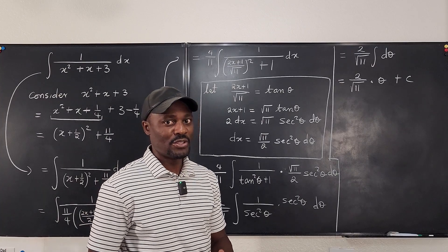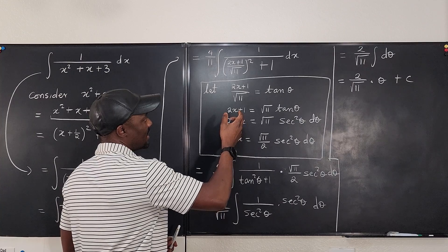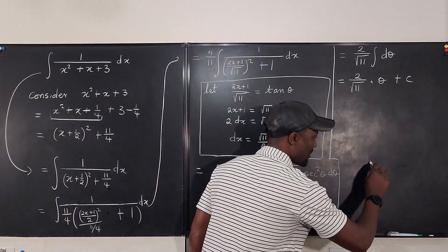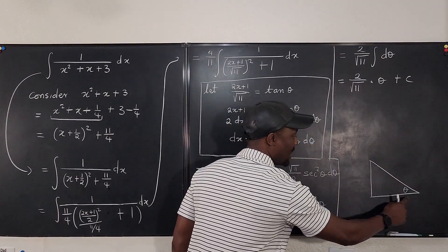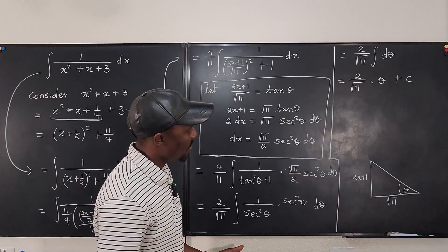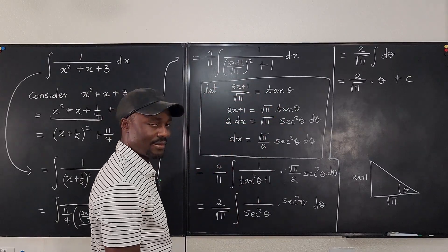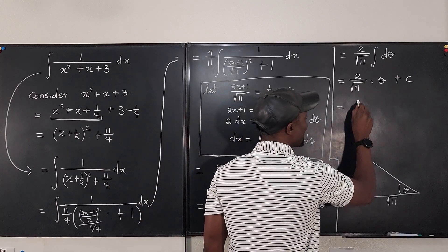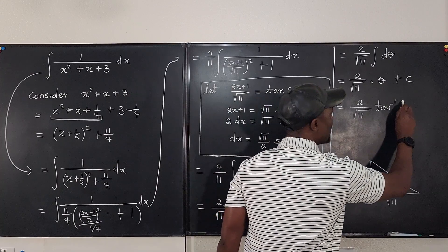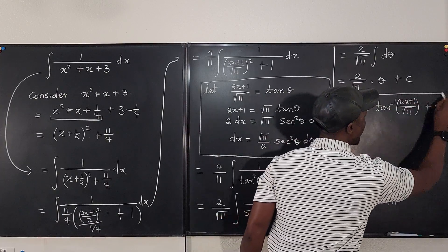But we did not start this work in terms of theta — it has to be in terms of x. Theta showed up when we set tan theta equal to two x plus one over square root of eleven. So theta is the arc tangent of that expression. Therefore, the final answer is two over the square root of eleven times the arc tangent of two x plus one over the square root of eleven, plus C.